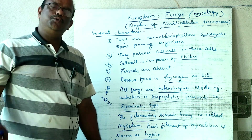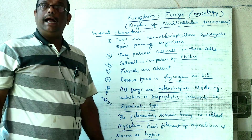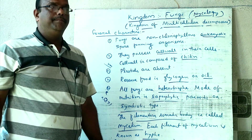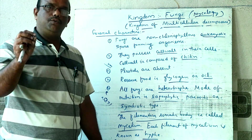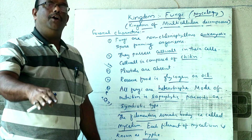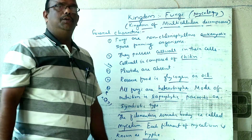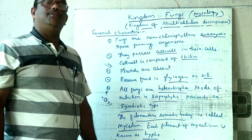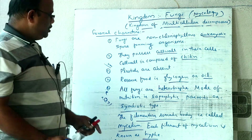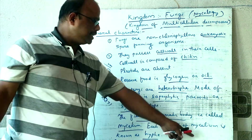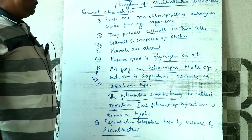The higher fungi are totally devoid of sexual reproduction — the sexual reproduction or perfect stage is absent. So higher fungi are called fungi imperfecti. Fungi reproduce asexually by means of spores and conidia.